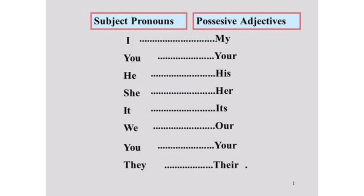Misalnya contoh: This is my book — ini adalah buku saya. Karena 'saya' ada di akhir kalimat, tidak bisa kalimatnya 'This is I book' — I harus berubah menjadi my. I berubah menjadi my; You menjadi your; He menjadi his; She menjadi her; It menjadi its; We menjadi our; You menjadi your — yang ini adalah you kalian, orangnya banyak; They menjadi their. Ini yang harus kalian hafalkan: subject pronouns dan possessive adjectives.